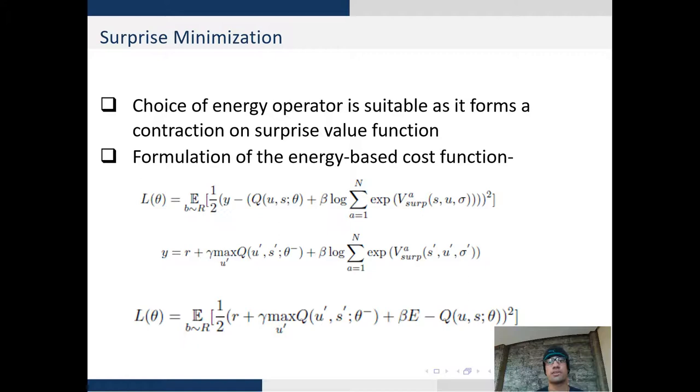We validate the choice of our energy operator as it forms a contraction on the surprise value function. This allows us to formulate the objective by using a weighting scheme beta, which is the temperature parameter.